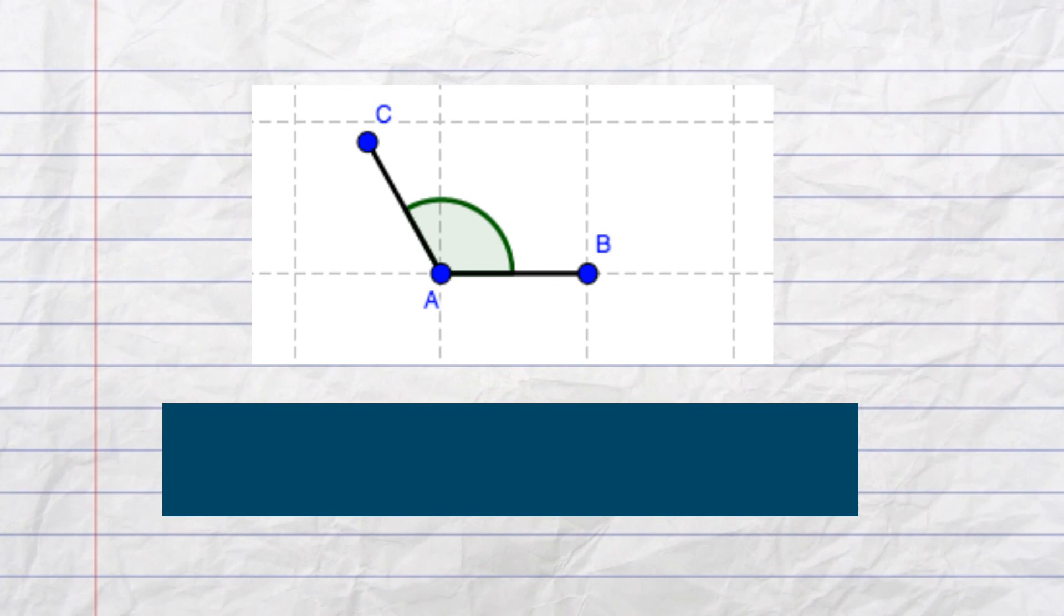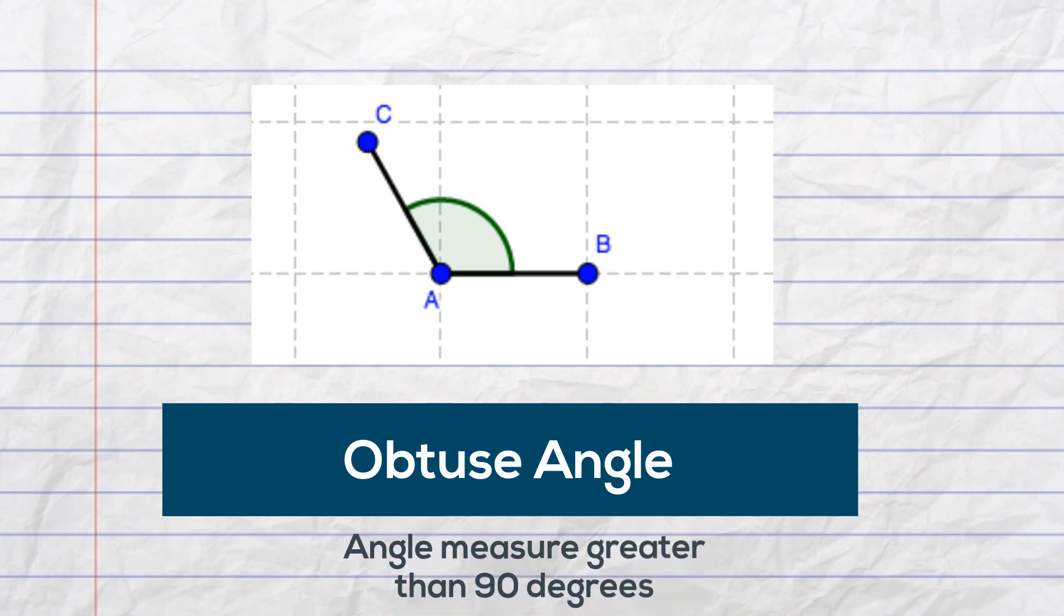How about this angle? This is an obtuse angle and it has an angle measure greater than 90 degrees but not greater than 180 degrees.